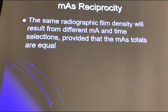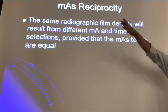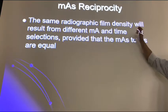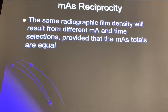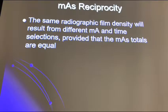MAS reciprocity: the same radiographic film density — or exposure, for computerized systems — will result from different MA and time selections, provided the MAS totals are equal. It doesn't matter what combination of time and MA you use; if the end result is the same MAS, you should have the same exposure, with some small variability.